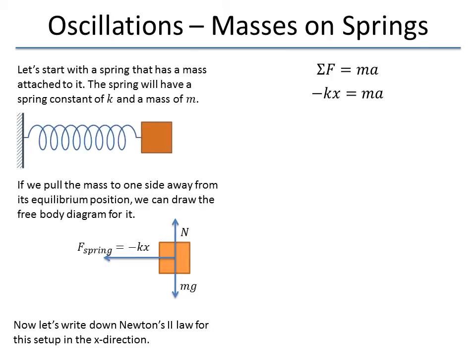So, I write down that my net force, I only have one force in the x-direction. It points in the minus kx direction. And I set that equal to ma. And the ma is just from Newton's Second Law.